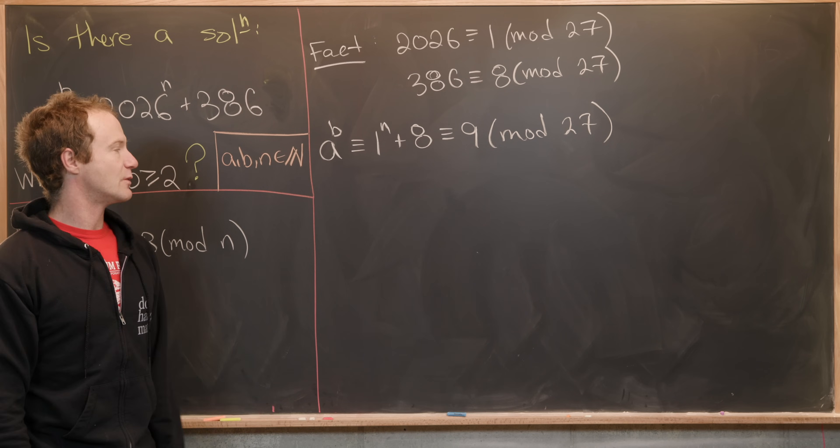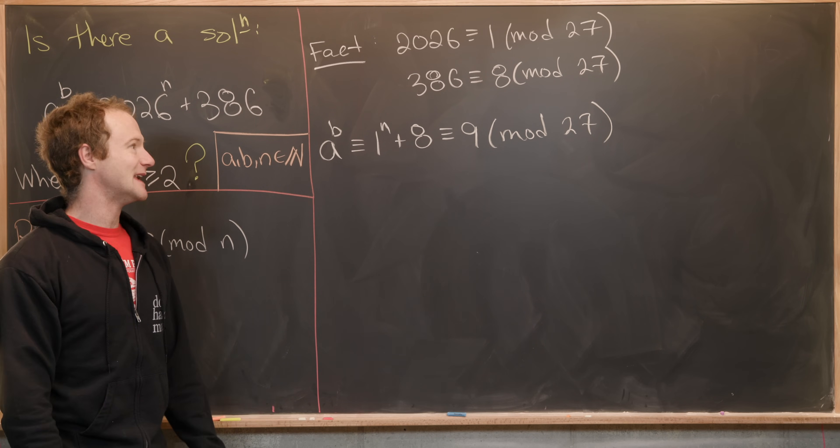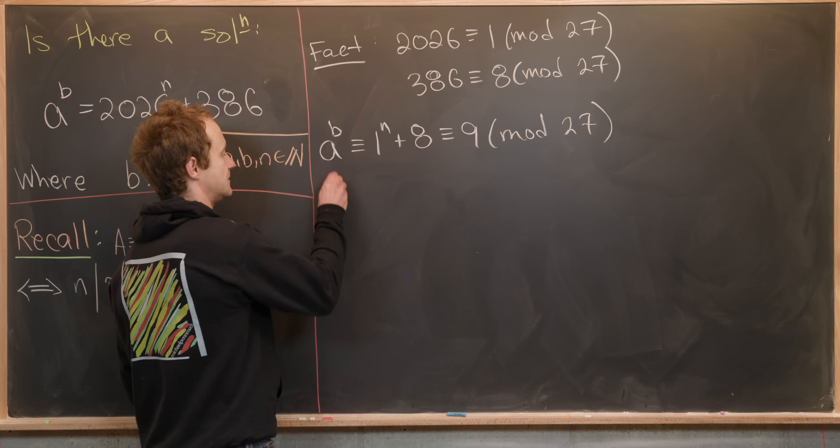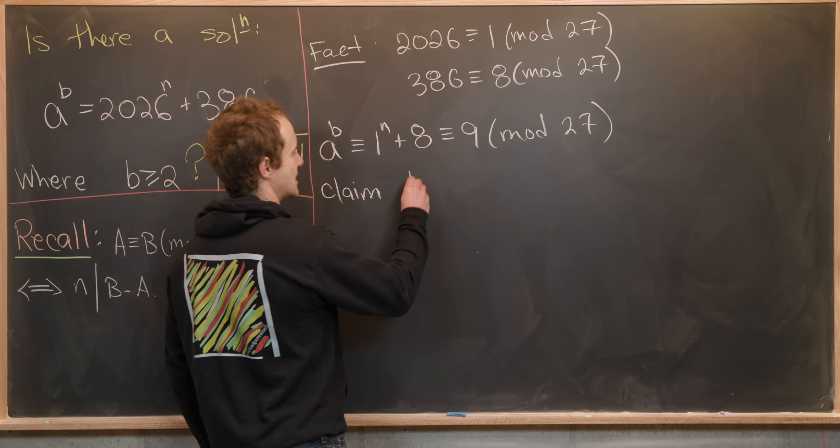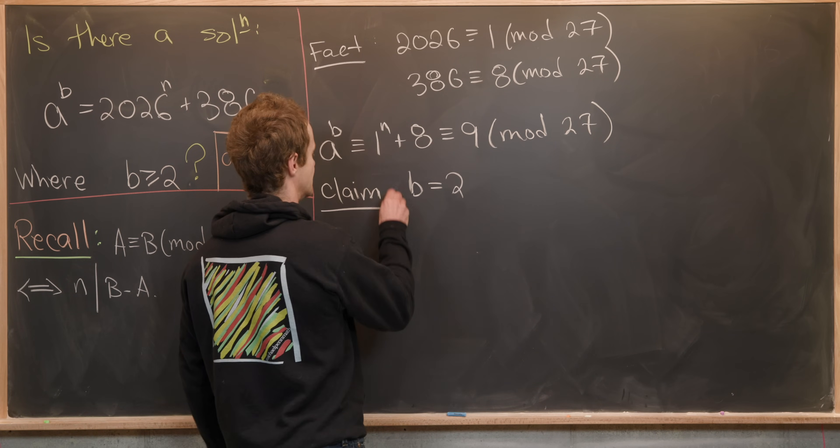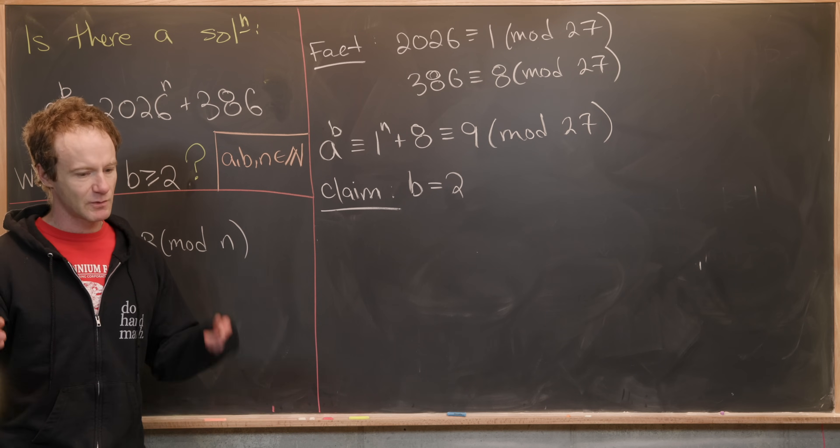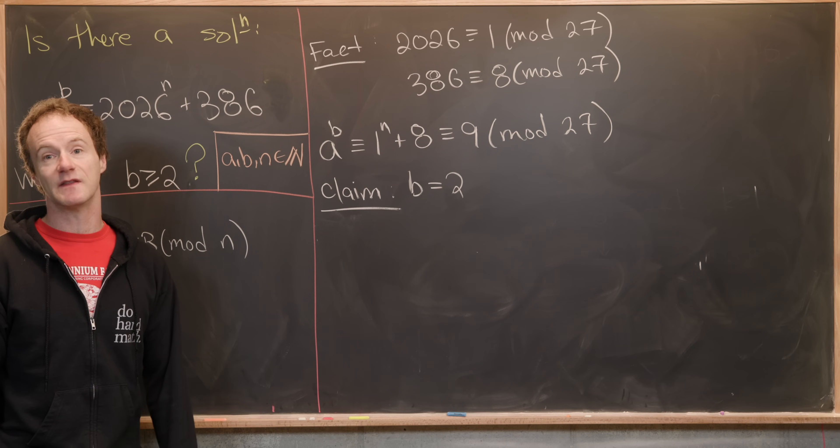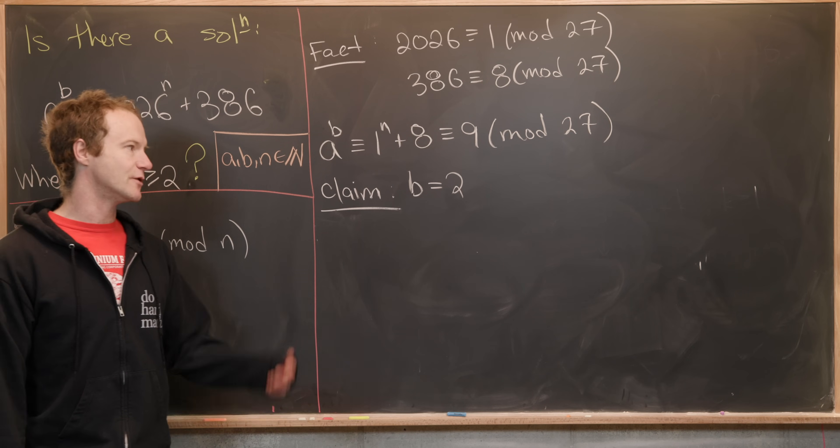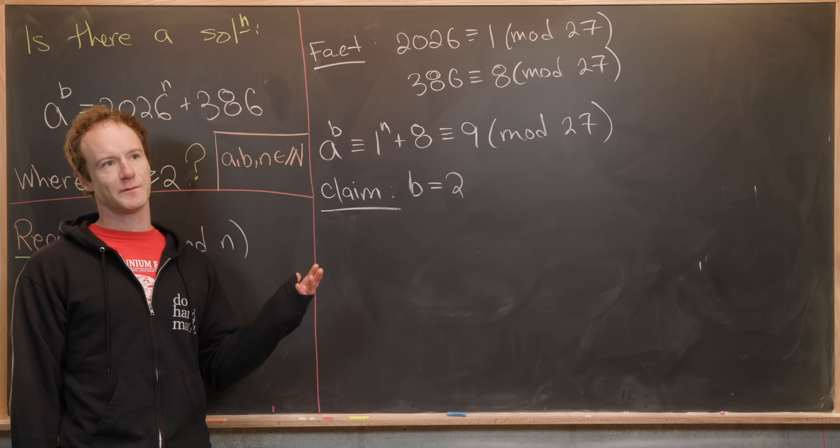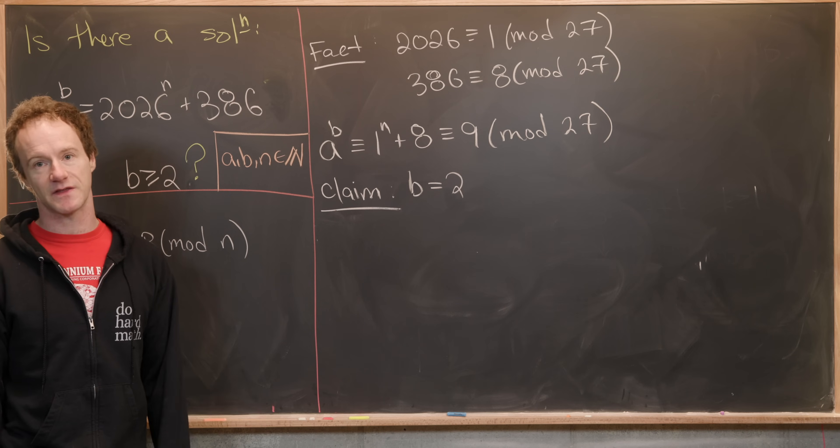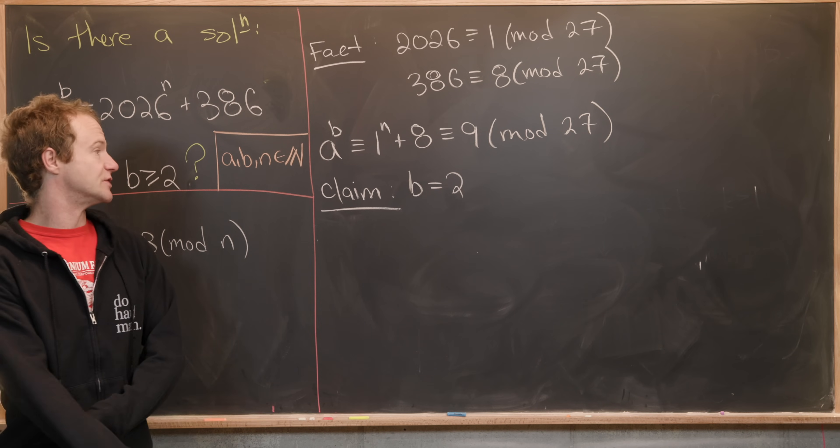But now we want to make the claim that this means that b has to be equal to 2. So let's do that. Claim: b = 2. Now there's a bunch of different ways to prove this claim. Maybe someone could post an elementary one in the comments. But since I know a little bit of group theory it's kind of hard for me to unsee this method. So let's jump into it.